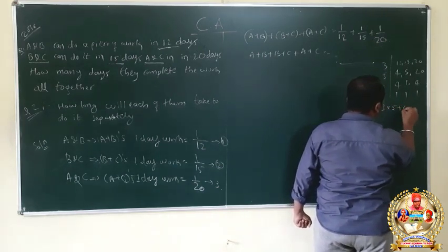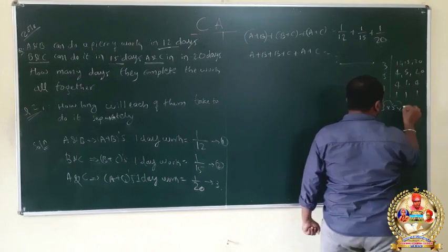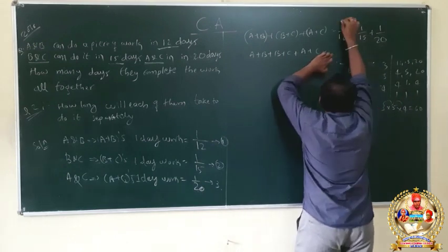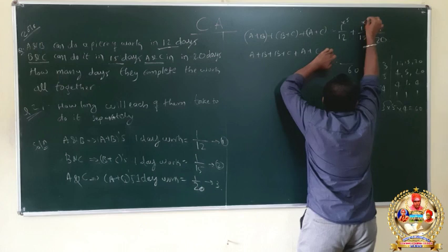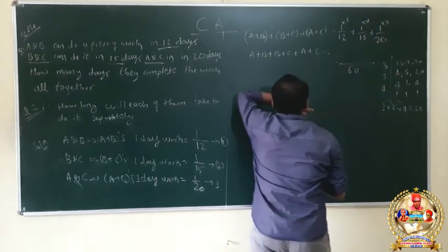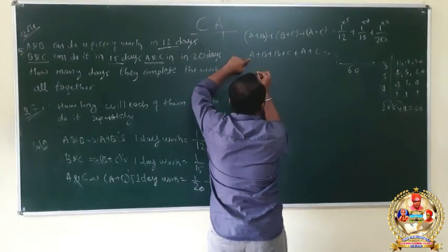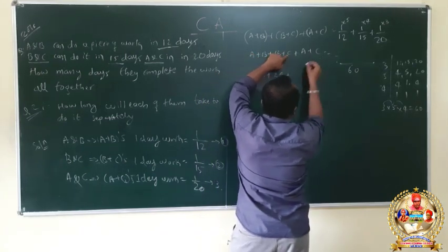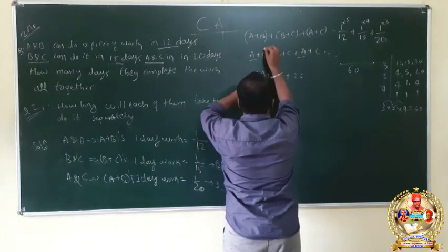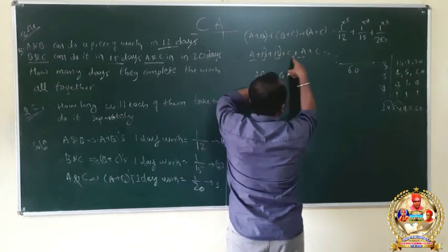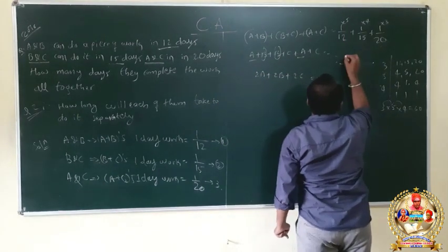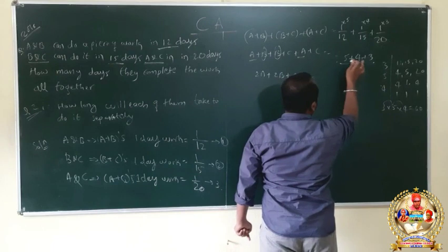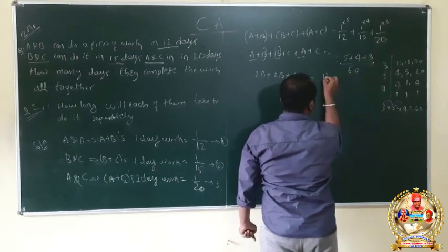The LCM of 12, 15, and 20 is 60. So: 1 by 12 plus 1 by 15 plus 1 by 20 — with LCM 60 — gives 5 plus 4 plus 3 over 60, which equals 12 by 60. Therefore 2A plus 2B plus 2C equals 12 by 60, which simplifies to 1 by 5.